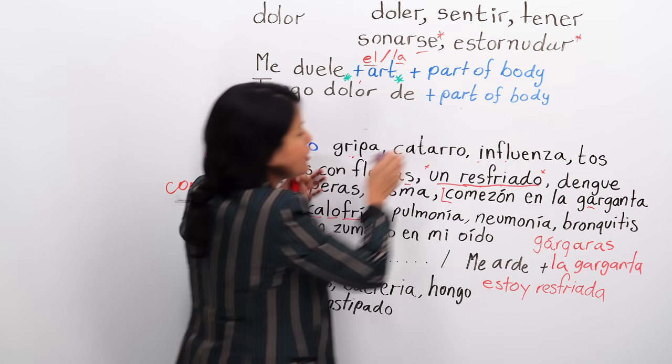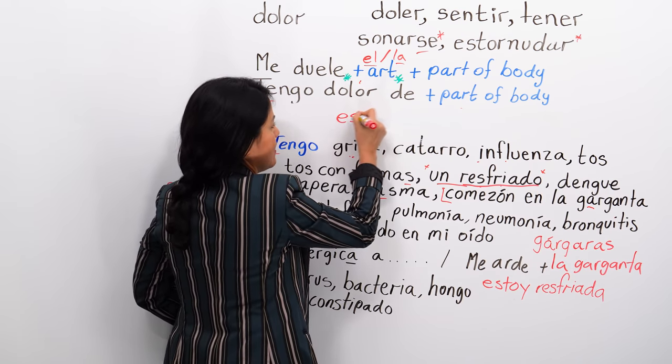Tengo escurrimiento nasal — that's when your snot keeps dripping, like your nose is crying. Como si tu nariz estuviera llorando. Tengo la nariz muy roja — my nose is very red — because tengo escurrimiento nasal, I have a lot of watery snot coming out.